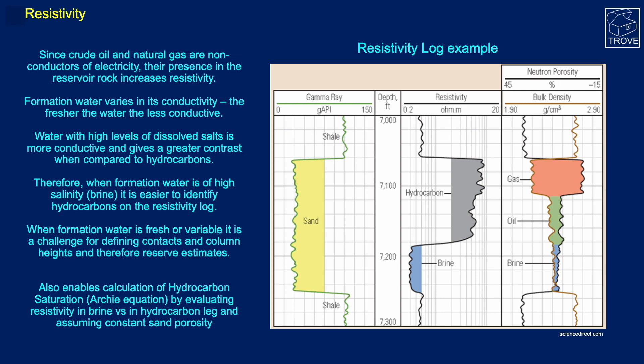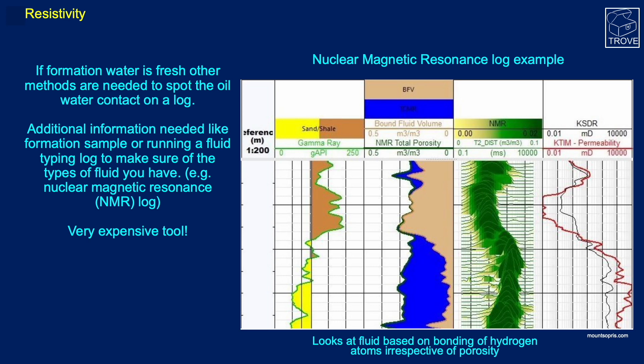Another tool - the neutron porosity and bulk density - can actually differentiate between gas and oil, and combining all these logs together we can identify the formation water or brine. In some cases, when the formation water is very fresh with very low salinity, it's quite resistive and doesn't look very different from the resistive oil or hydrocarbons above. In that case we need additional information - we can run logs like nuclear magnetic resonance, which is shown here, though it's an expensive tool to run, or we can actually take samples to identify hydrocarbon legs from water-bearing legs.